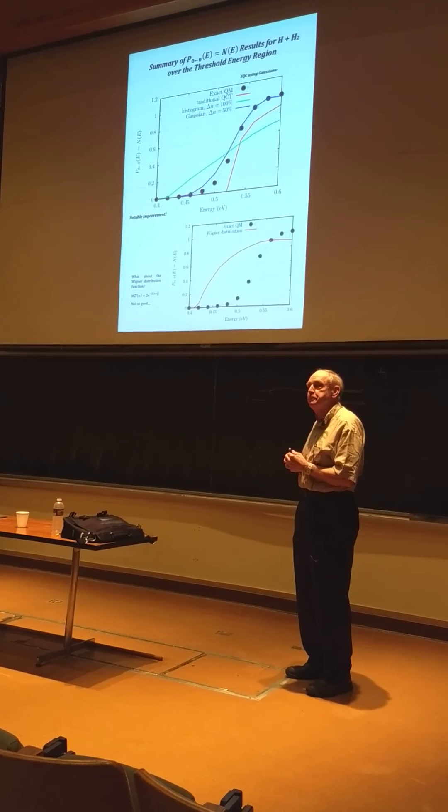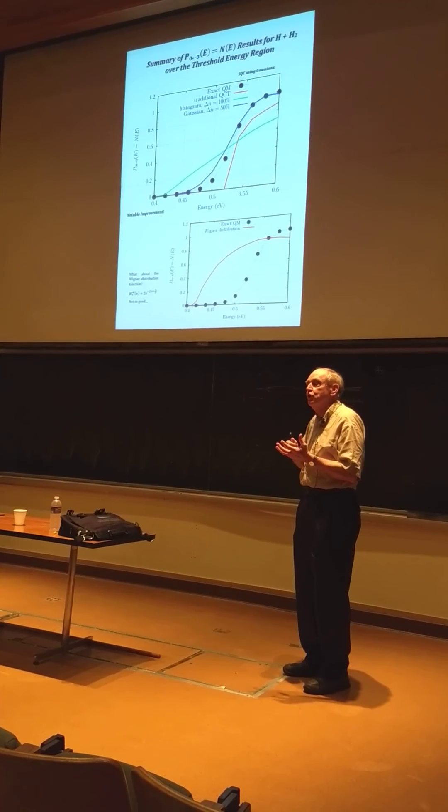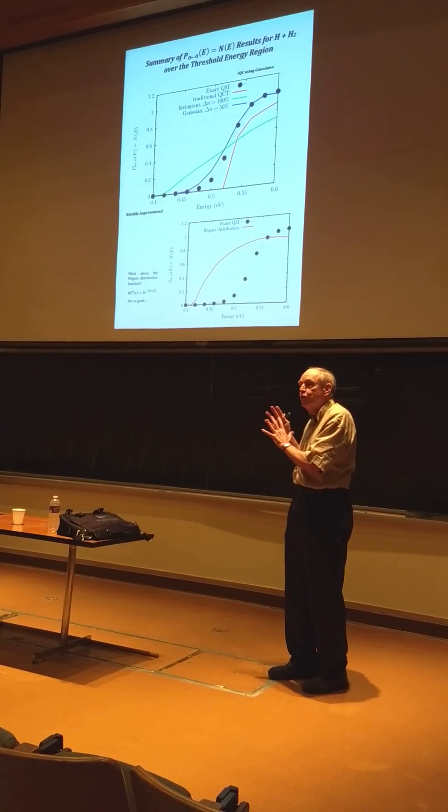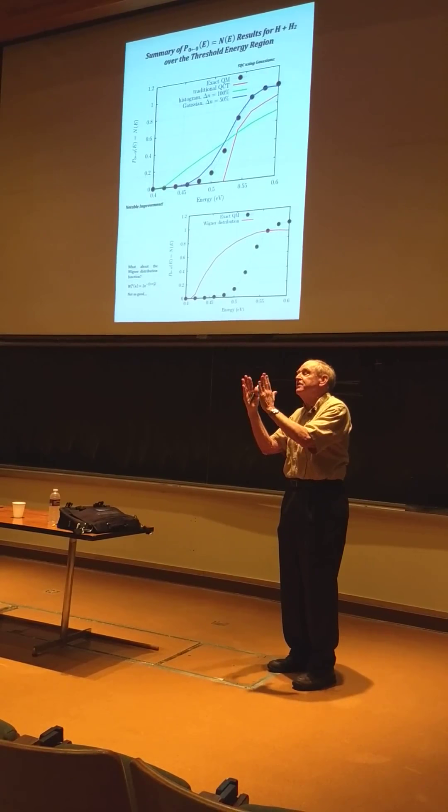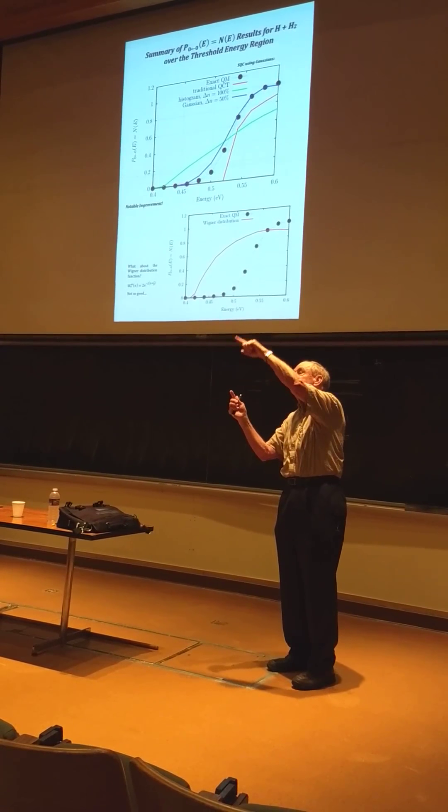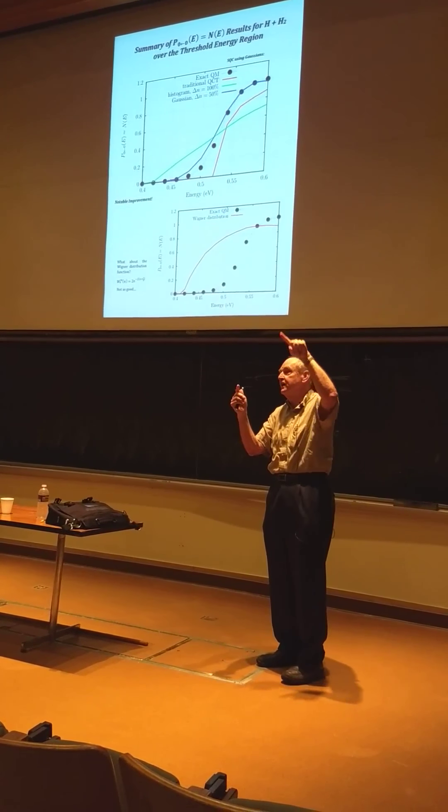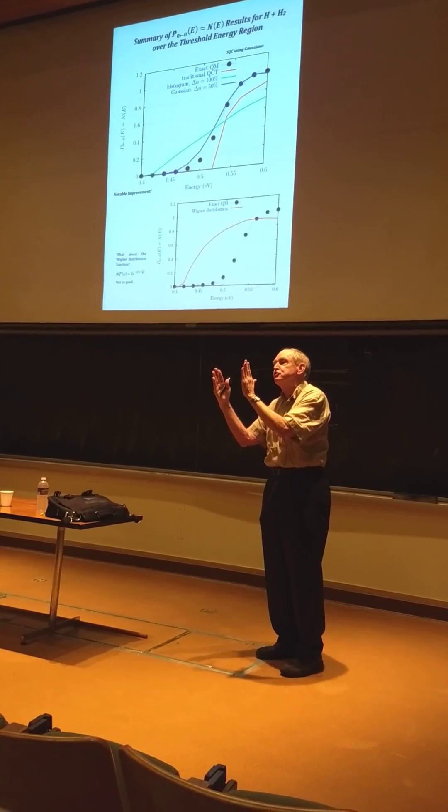He was doing this plain old fashion, quasi-classical, correct? But he found that he was getting better results if he shrunk the window. Actually, he didn't use histograms. He used Gaussian. Around each, I don't know, but the main thing was that it shrunk them down.